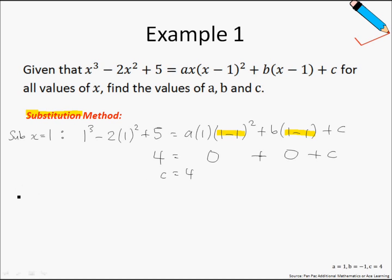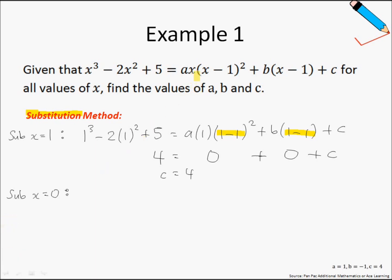We will perform a few more substitutions to get all values of a, b, and c. The next value I want to choose is x equals 0. Substituting x equals 0 can be very helpful because a times 0 is 0, so that term disappears. Let's try it now.